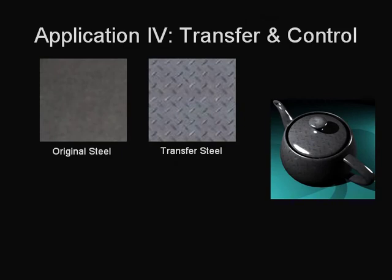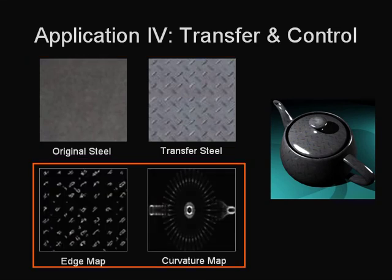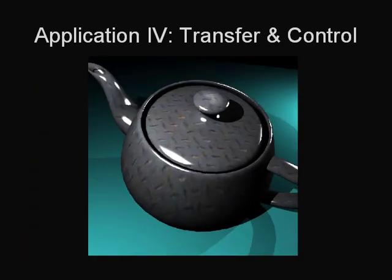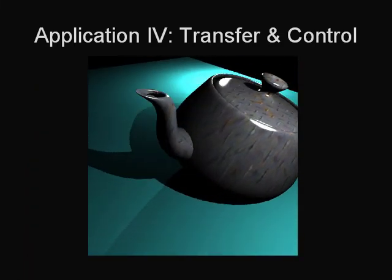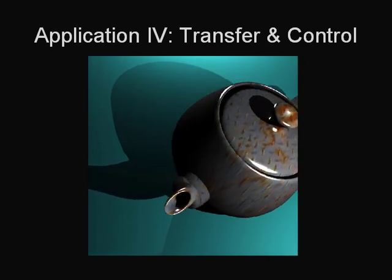Our final example is a rusting teapot. We transfer the time varying appearance to a new static texture of a steel diamond plate. We also control the rusting to happen faster at the edges and in high curvature regions. We can render with changing viewpoint and specularities as the surface evolves over time.